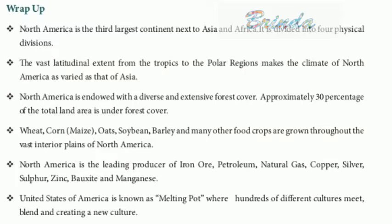North America is the third largest continent next to Asia and Africa. It is divided into four physical divisions. The vast latitudinal extent from the tropics to the polar regions makes the climate of North America as varied as that of Asia. North America is endowed with a diverse and extensive forest cover. Approximately 30% of the total land area is under forest cover.